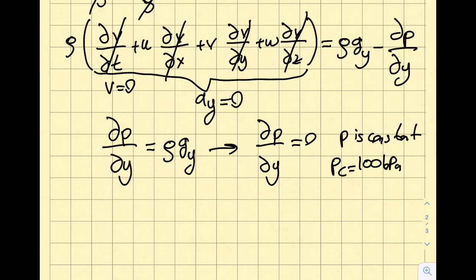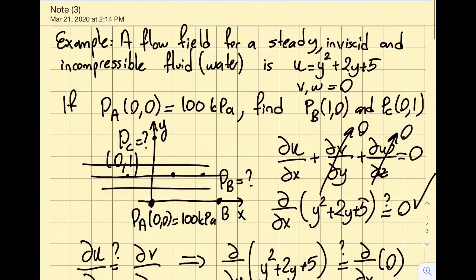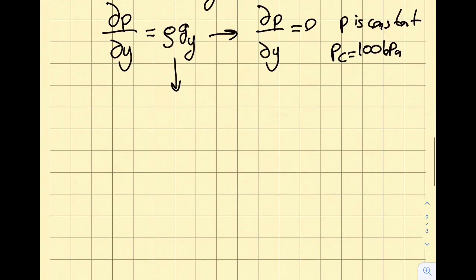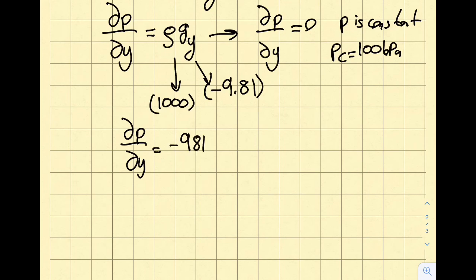The second approach that I will take is I may say that, you know what, the way that it is given to me, it seems like the gravity is pointing down in the negative y direction. So let's do this question with the gravity facing down as well. So in this particular case, as I mentioned, then this g y value will be minus 9.81. And I'm going to say that this is 1000, this is the density of water.